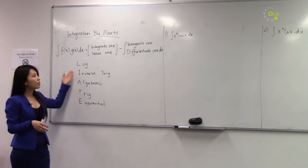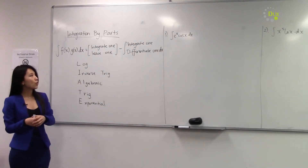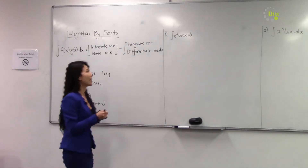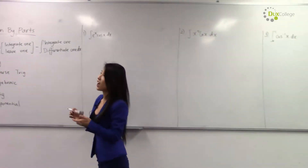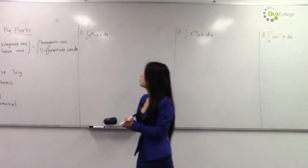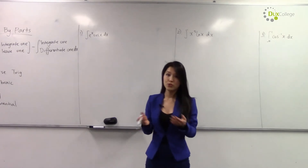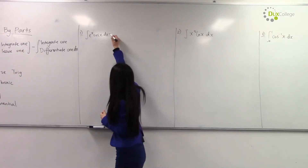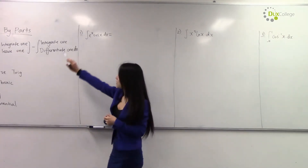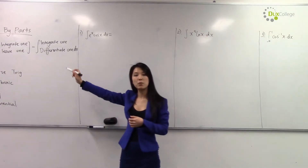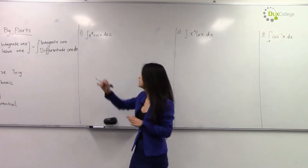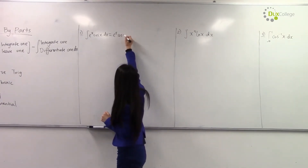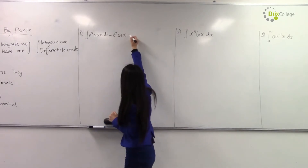Following LIATE, let's go through our first example. In our first example, we will prefer to integrate exponential. So following the rule, we integrate one and leave one — integrate exponential, leave cos. Then subtract.